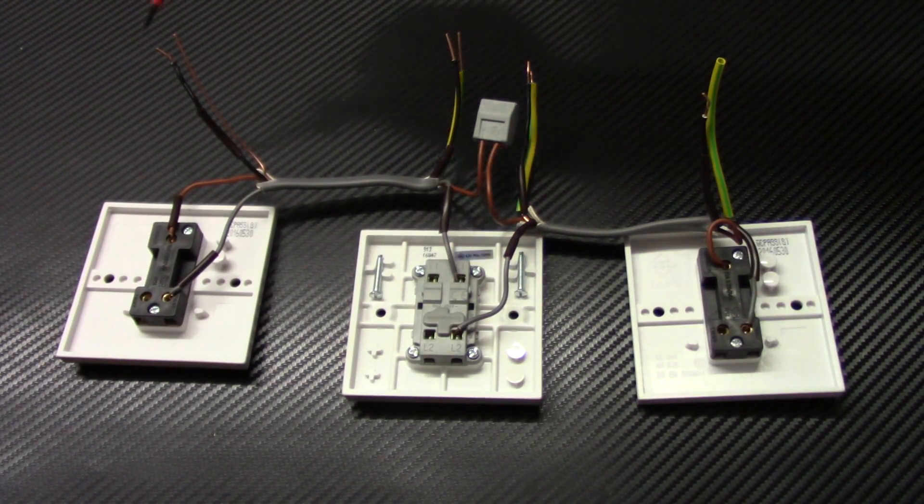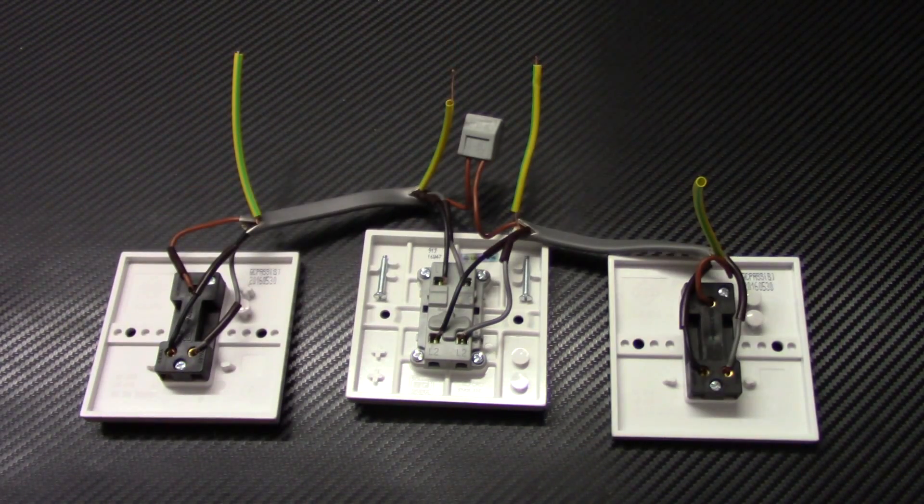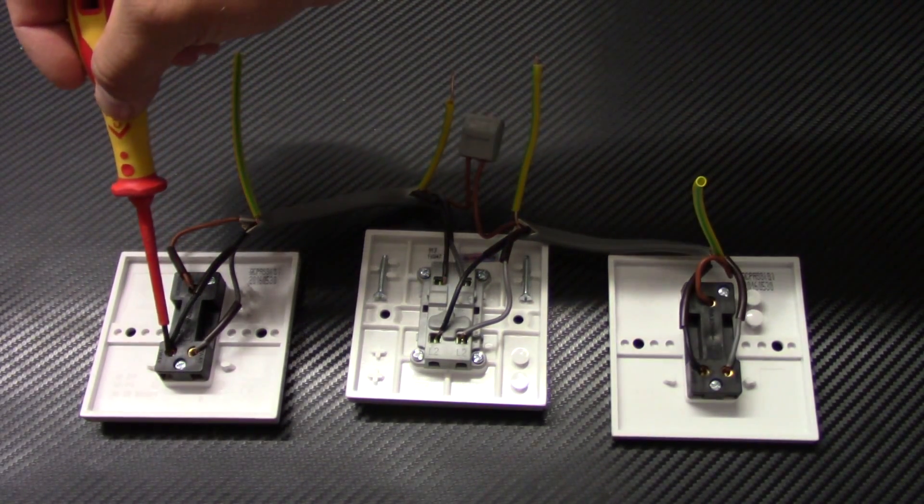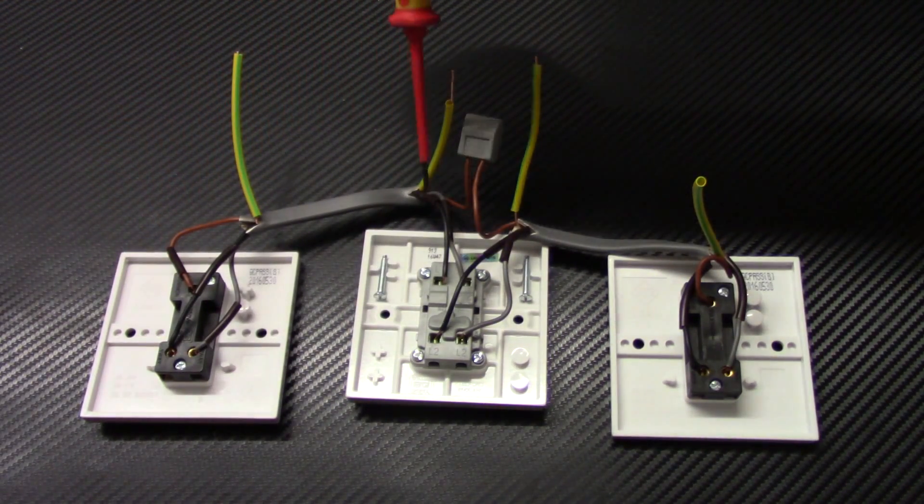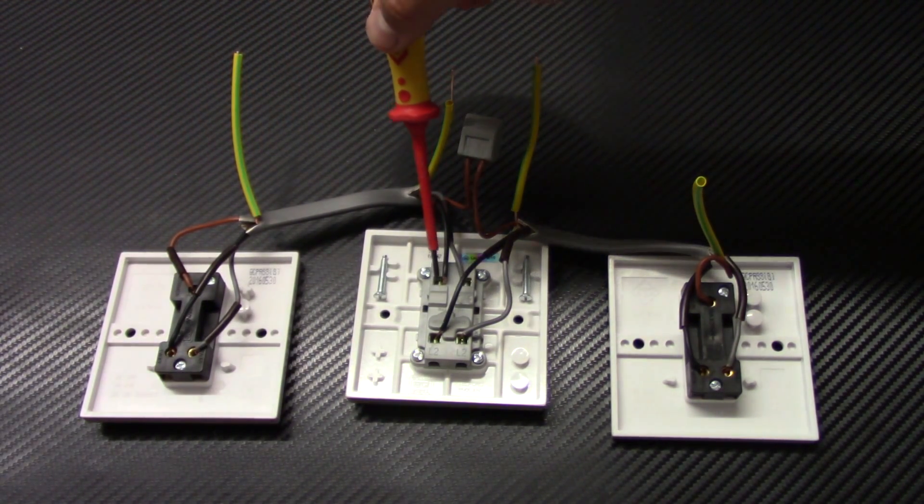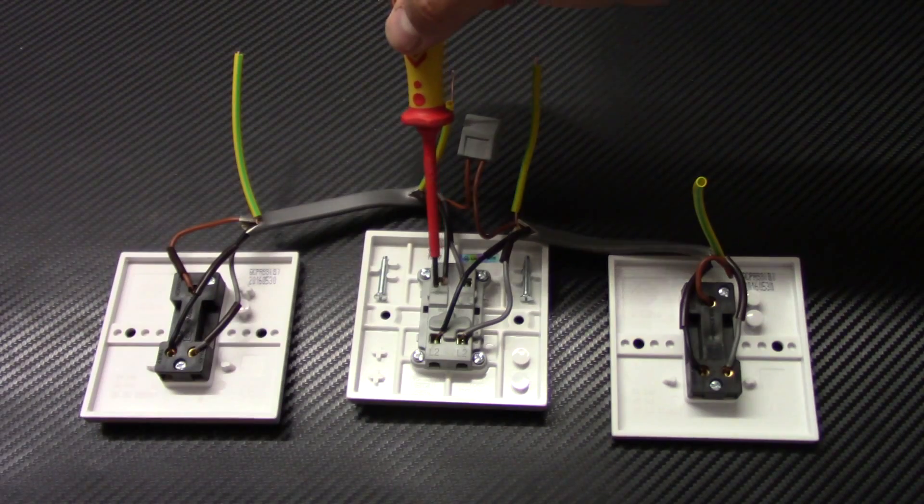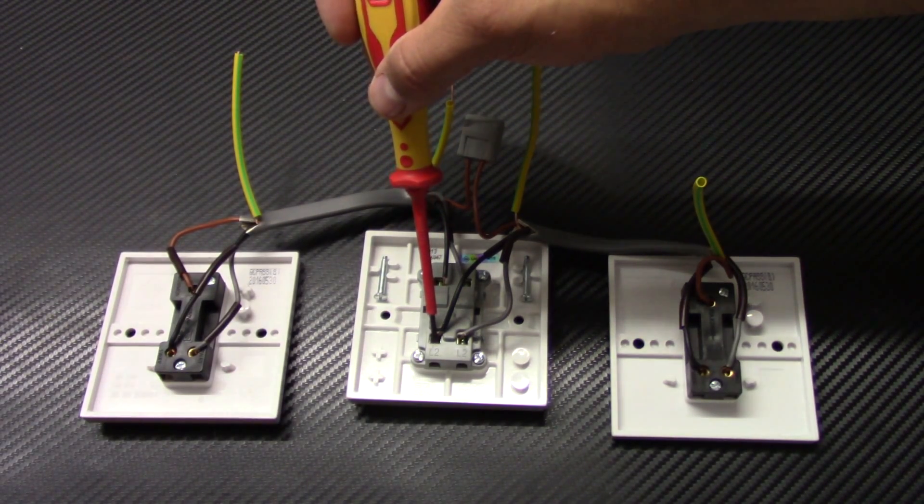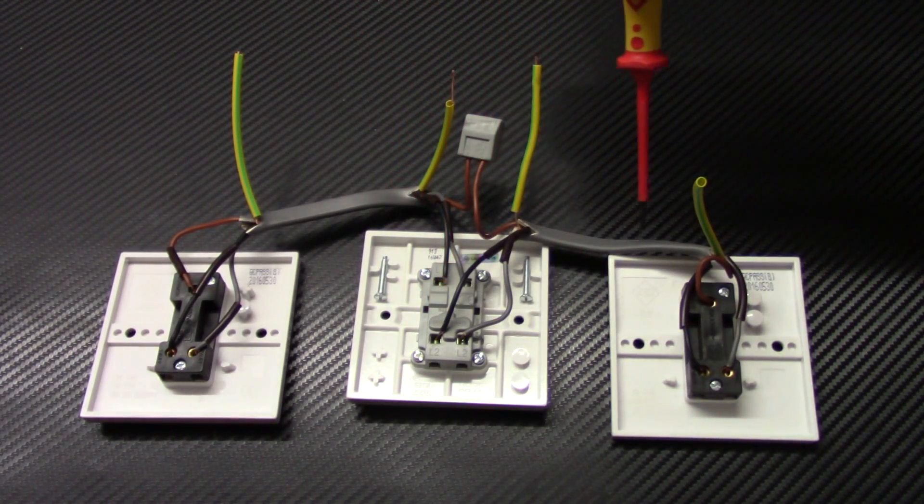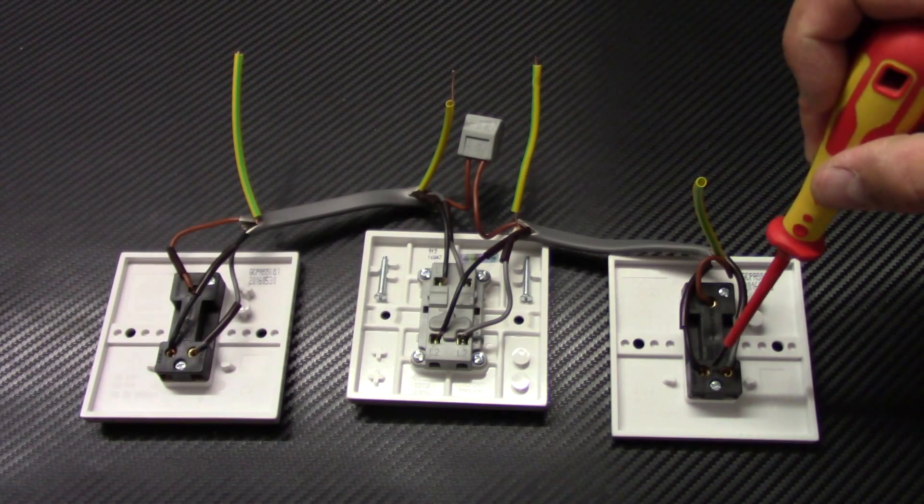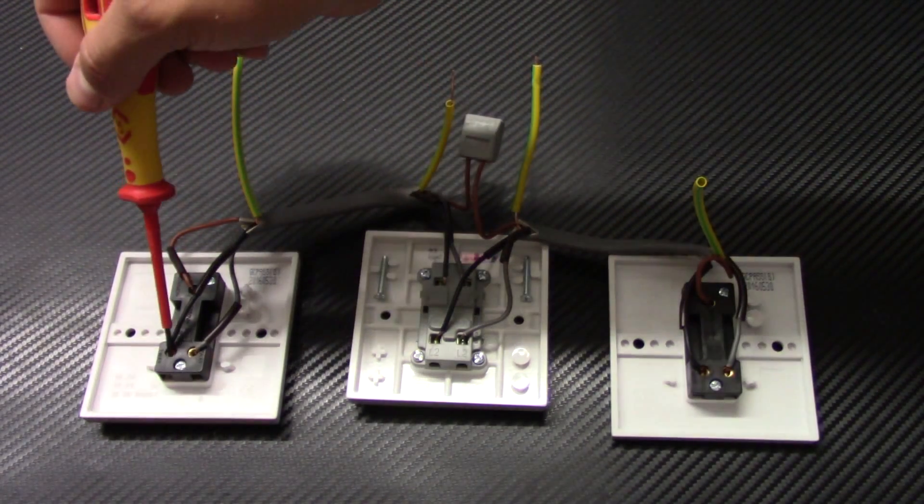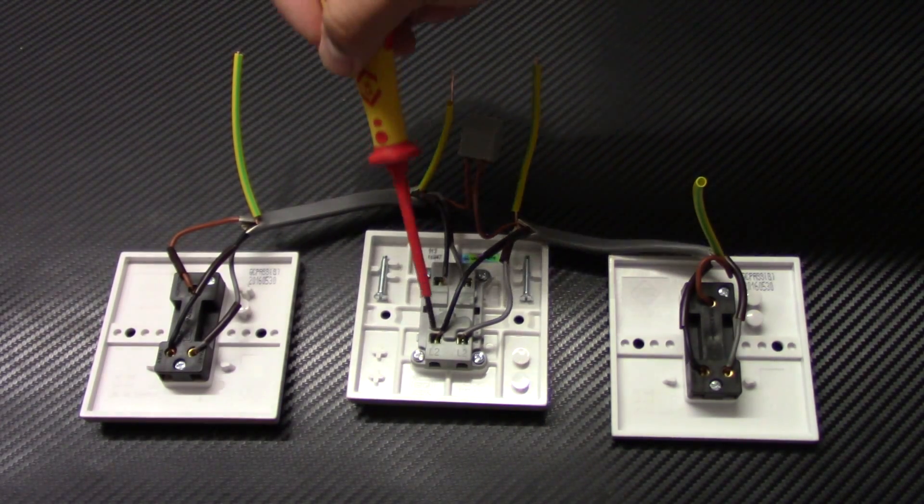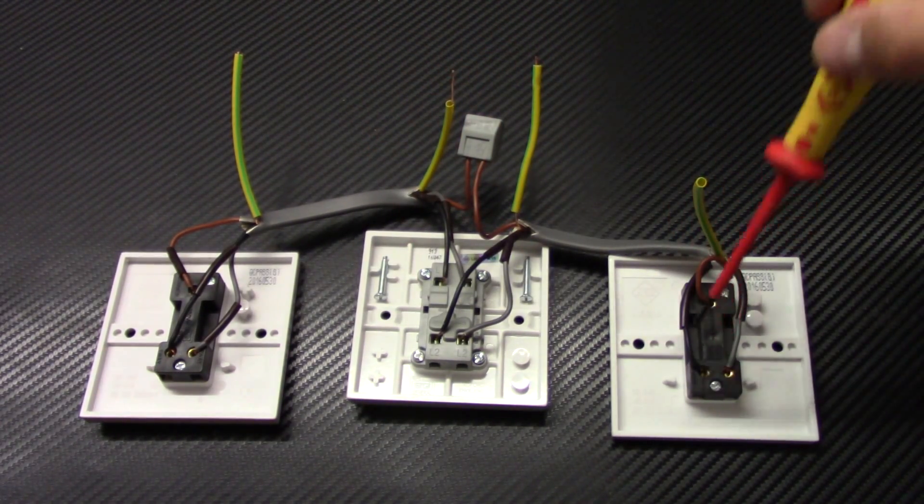Now let's connect the black wire. The black wire is coming from the L1 or one-way in two-way switch. Then going to intermediate switch to L1. Then on the opposite from L2 to another two-way switch to L1. So L1, L1, L2, L1.